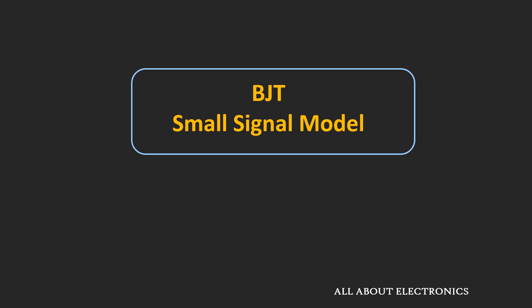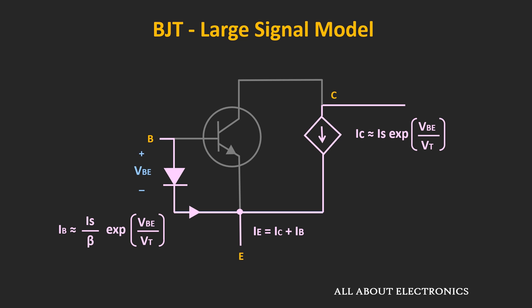In the previous video, we discussed that based on the magnitude of the input signal, we can model the BJT as either a large signal or a small signal model. We then discussed the large signal model of the BJT. Now let us understand the small signal model.